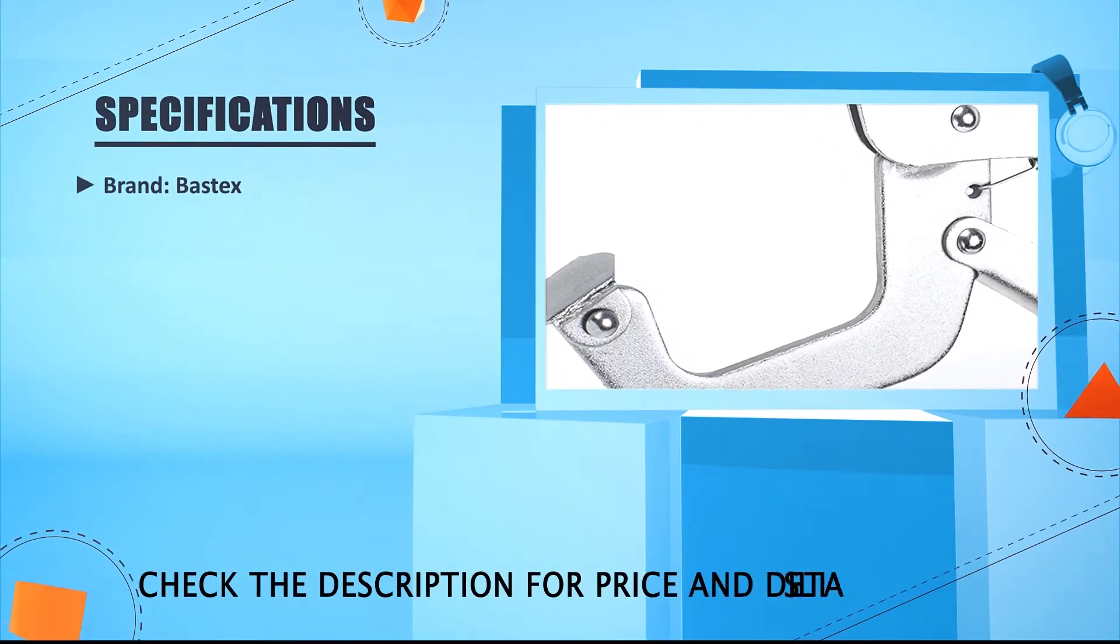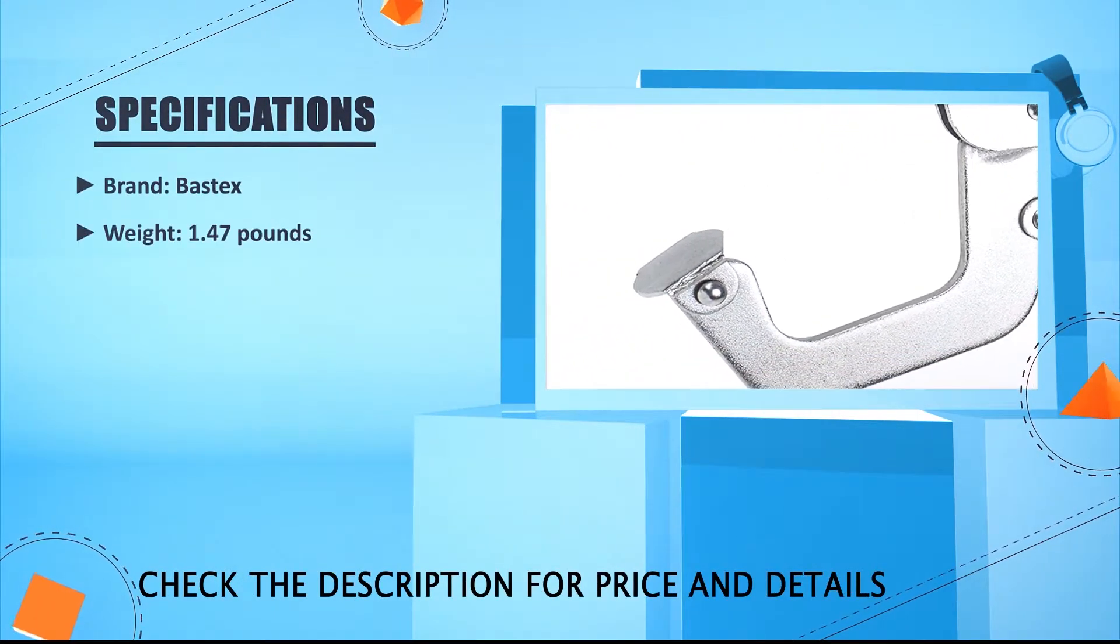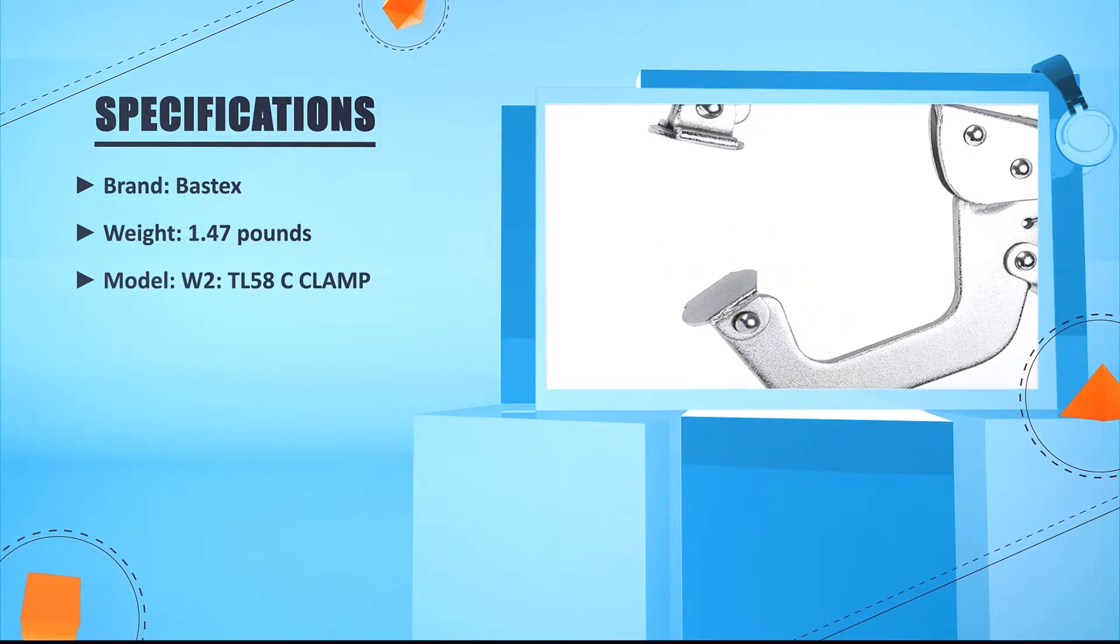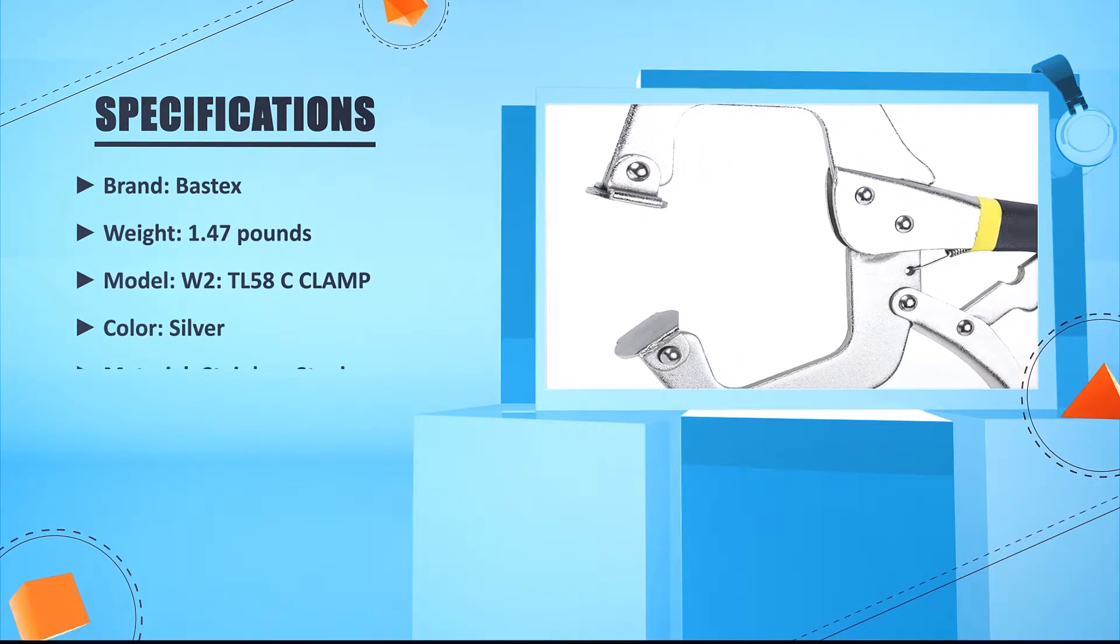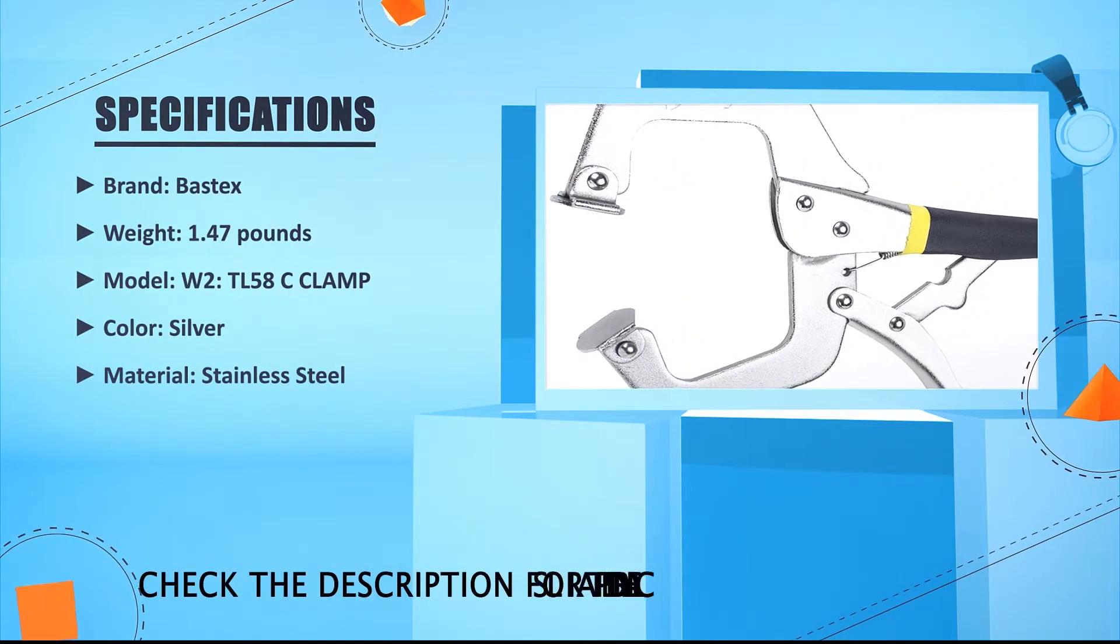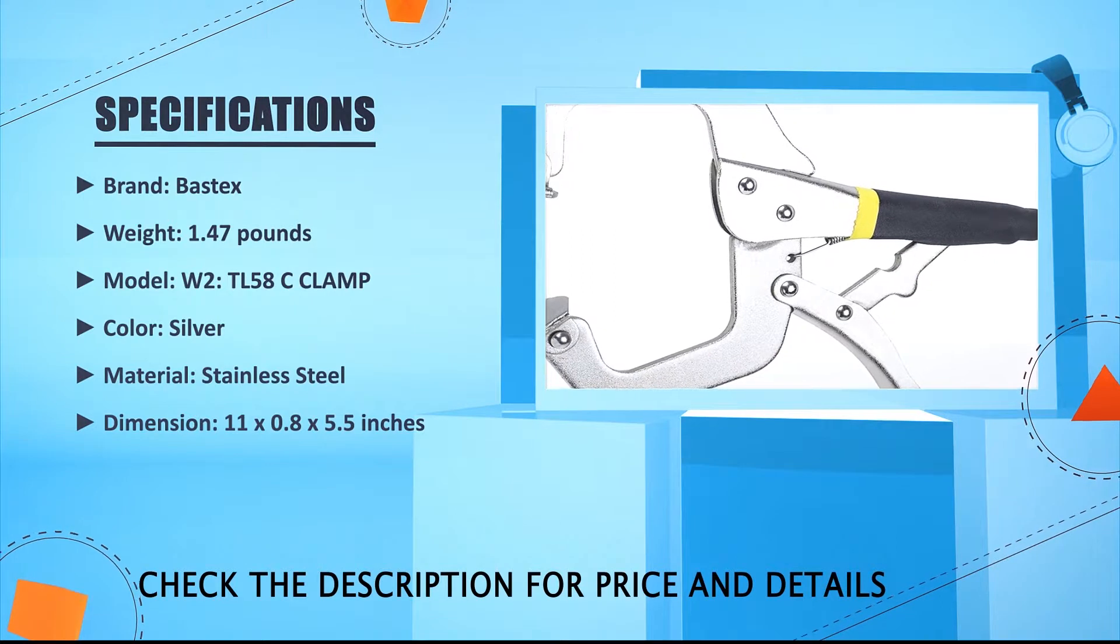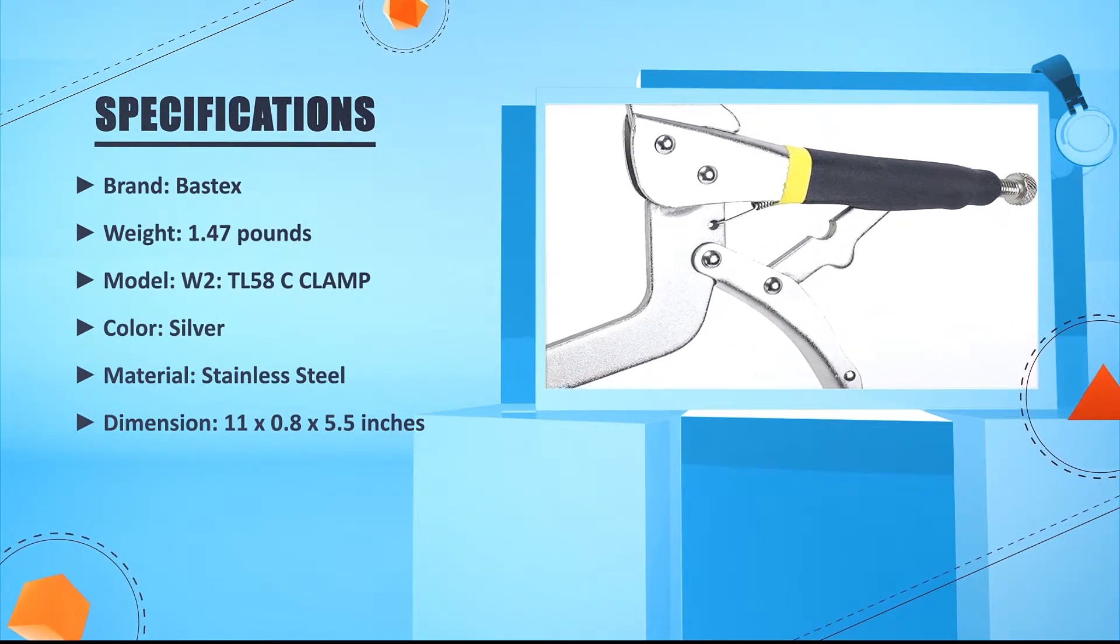Brand: Bastix. Weight: 1.47 lbs. Model: W2 TL58C clamp. Silver. Material: Stainless steel. Dimension: 11 in 2 0.8 in 2 5.5 inches.